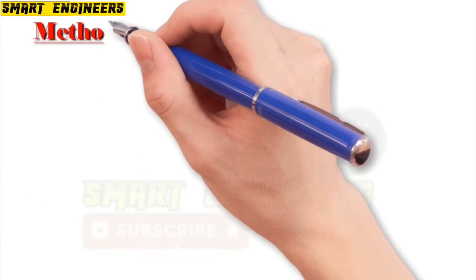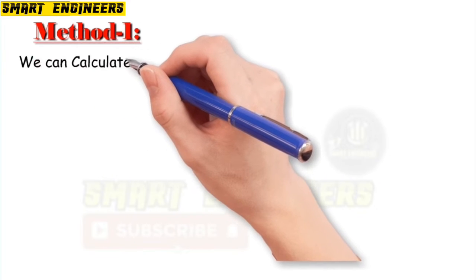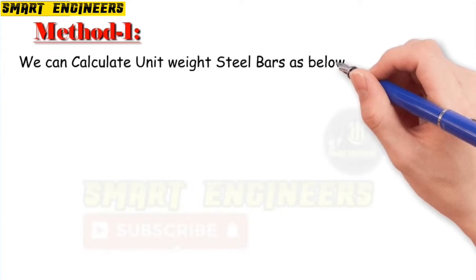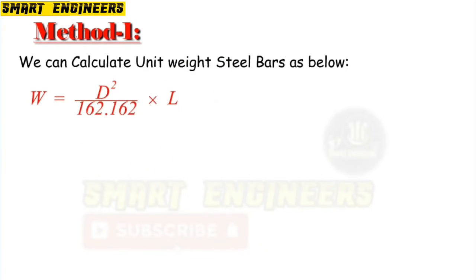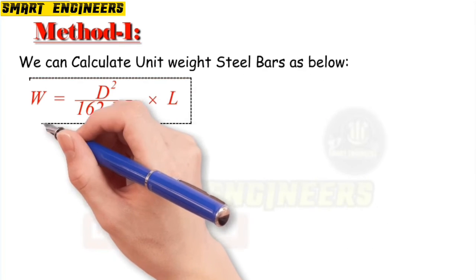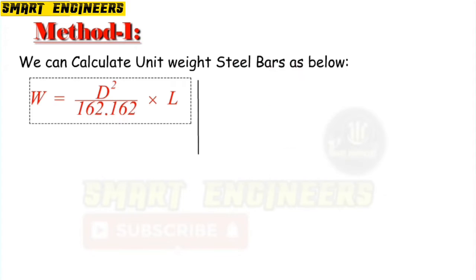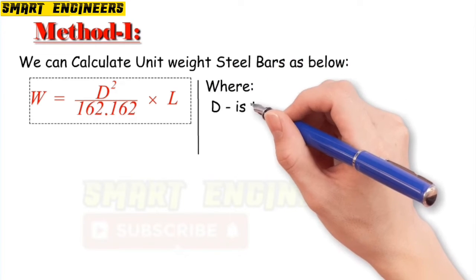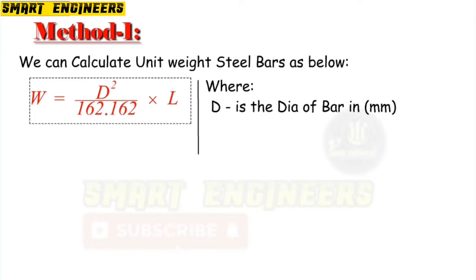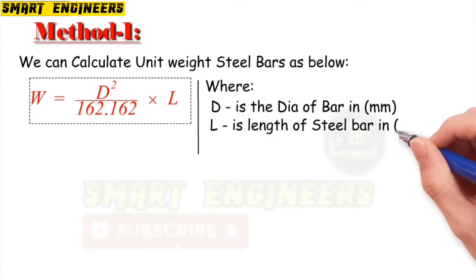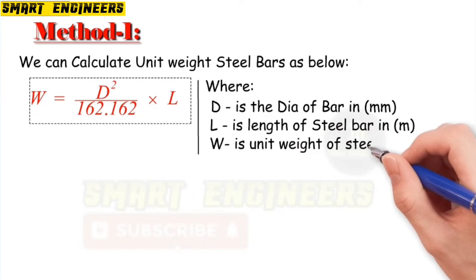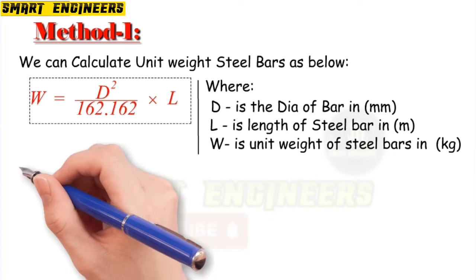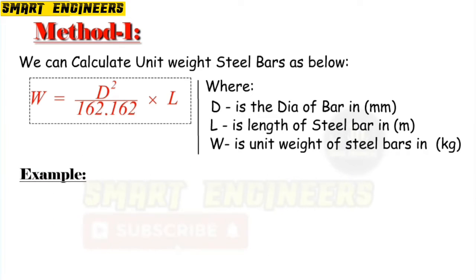Method one. We can calculate the unit weight of steel bar as below. The formula is: W = D² / 162.162 × L, where D is the diameter of steel bars in millimeters and L is the length of the steel bar. We calculate the steel weight for one meter length, so L will be equal to one meter. W is the unit weight of steel bars in kg.